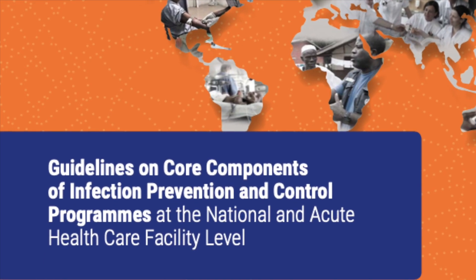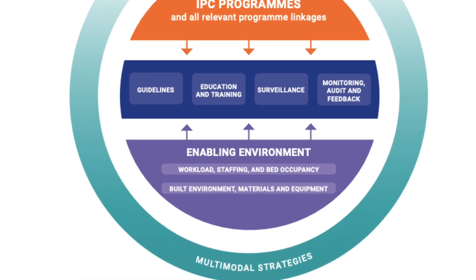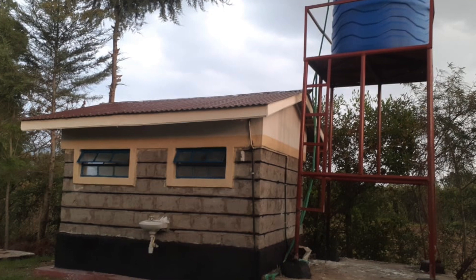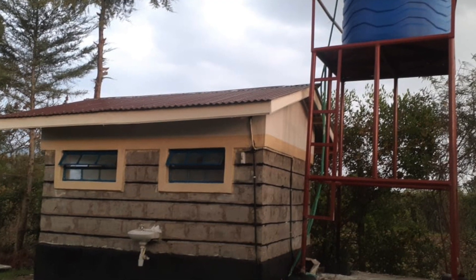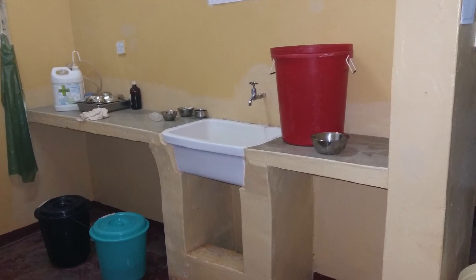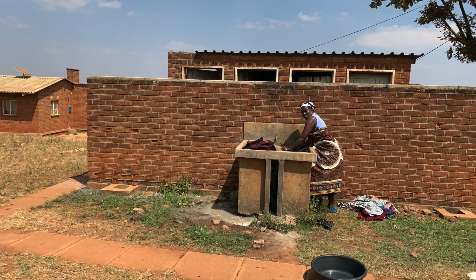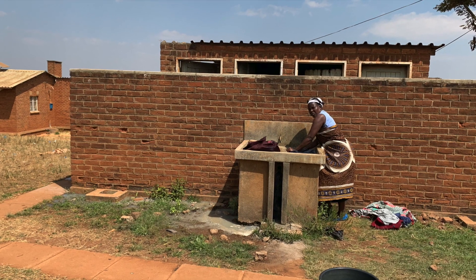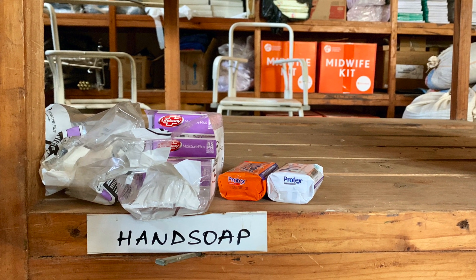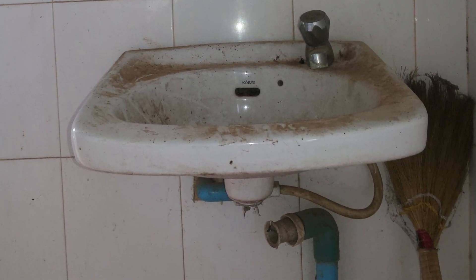WHO has developed a list of eight core components for IPC, which includes the built environment as component number eight. This global guidance recognizes the role of WASH in providing IPC, yet implementation of IPC in low and middle income countries often overlooks the need for improved WASH services, working off the assumption that these necessary resources are adequate. For example, national IPC guidelines may discuss the need for water and soap for hand washing, but don't address the fact that many facilities in the country have inconsistent water supply.